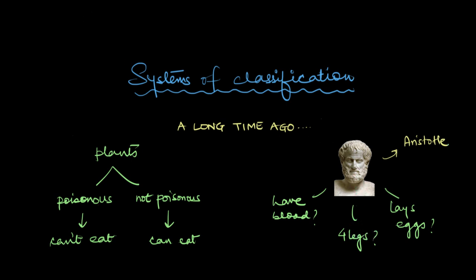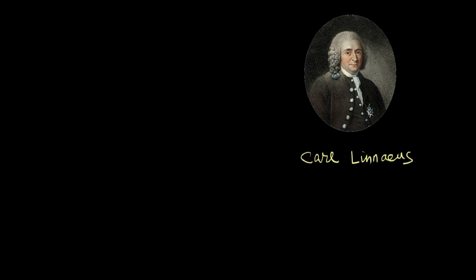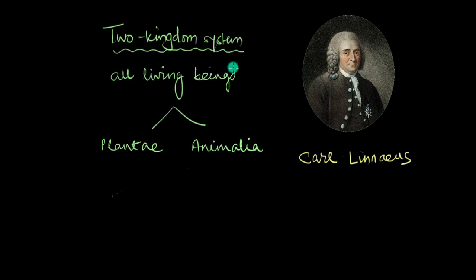But it was a Swedish botanist named Carl Linnaeus who made a breakthrough. In this video, we are going to take a walk down history lane and see how biological classification has developed over the last few centuries. Carl Linnaeus came up with the two kingdom classification system. It classified all living beings into two kingdoms, Plantae and Animalia.